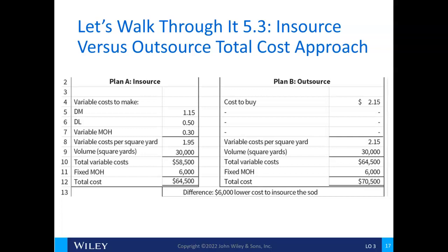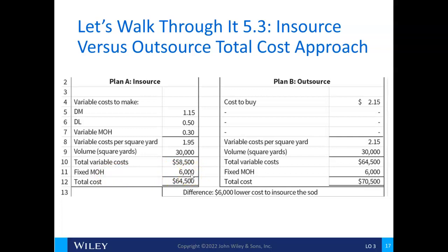Here's an example comparing insourcing versus outsourcing. If we make something ourselves, we have direct material, direct labor, and variable overhead. Variable costs are $58,500 for 30,000 square yards. The fixed manufacturing overhead may be an avoidable cost — if we can get rid of it, then it's relevant. Our total cost to keep making it ourselves is $64,500.